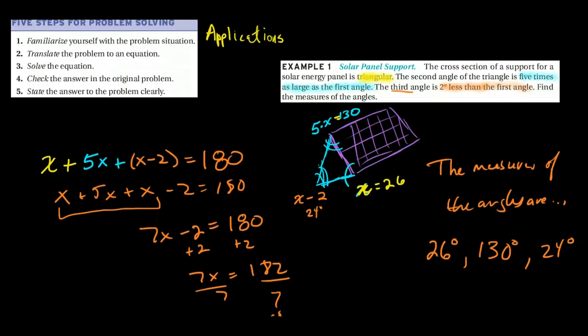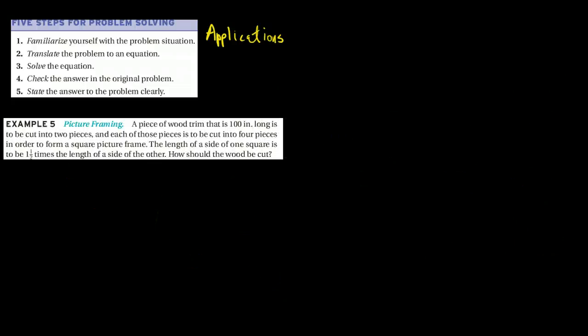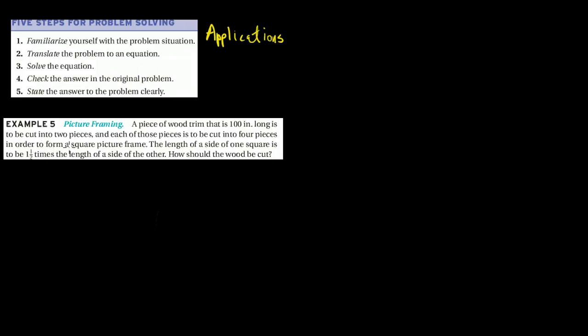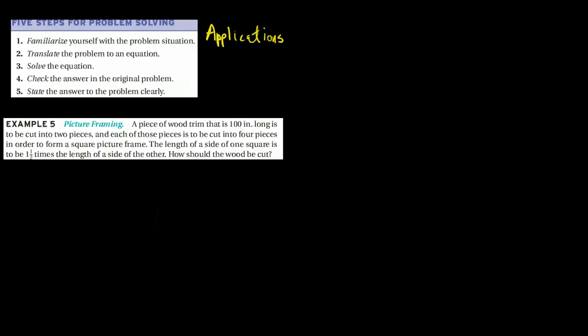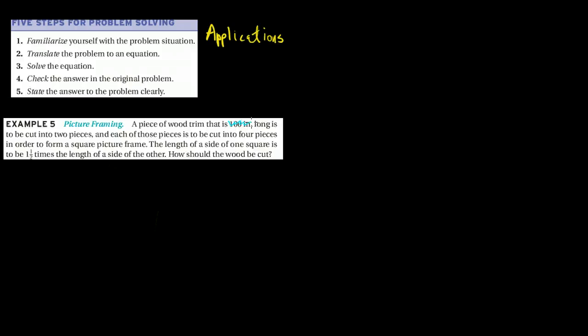Let's take a look at another one. Remember, you shouldn't be scared by any of this stuff. Let's try this one, a picture frame. So a piece of wood trim that is 100 inches long is to be cut into two pieces. And each of those pieces is cut into four pieces in order to form a square picture frame. So we have something that's 100 inches long.